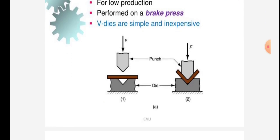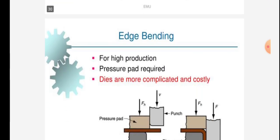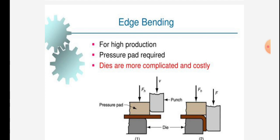Punch is given, die is given. Figure shows the V die punching. Edge bending for high production requires a pressure pad.